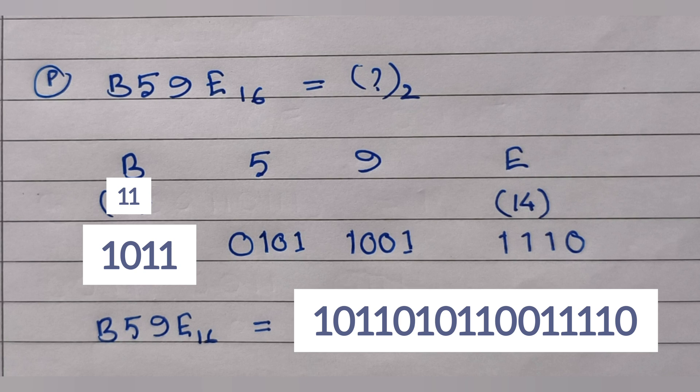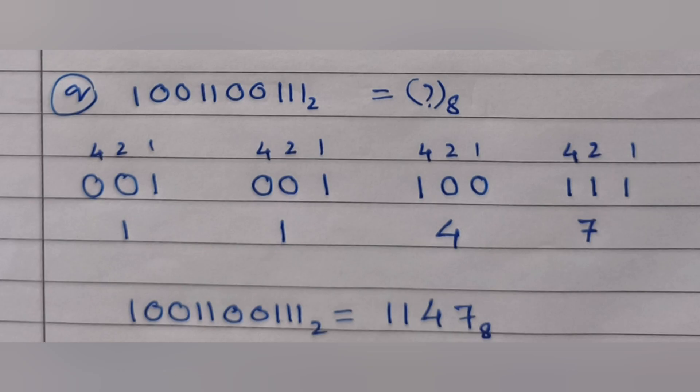To convert a binary number into octal, we group the number from the right hand side in groups of three digits. As with hexadecimal, we write powers of 2 — 1, 2, 4 — above each group and add up the values where the digit is 1. Finding the addition for each group gives us the answer 1147 with base 8.